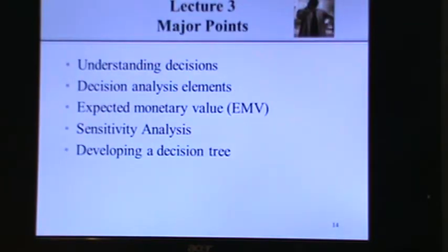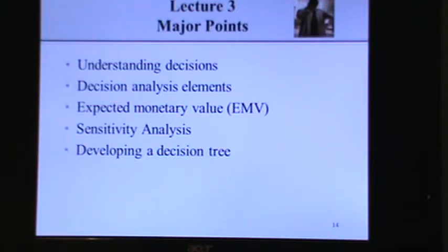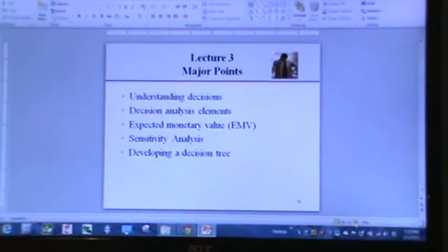To summarize tonight: we discussed how to understand decisions and basic decision analysis elements — decisions, outcomes, and probabilities. We covered how to calculate expected monetary value using sum product, touched on sensitivity analysis, and discussed developing decision trees. Now I'm going to shift out of the slides and bring up the template you'll get on Sakai for assignment number three.